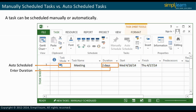It is ideal to enter task duration instead of start or finish dates to appreciate the auto-scheduling features. As the project manager continues to enter more tasks, link them, and assign resources, the start and finish dates in the project plan get adjusted automatically.